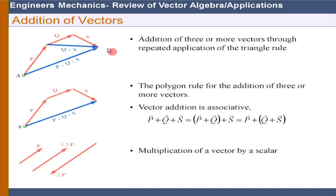When adding three or more vectors, we can either apply the triangle rule repeatedly or use the polygon rule. We can do Q + S first and then add P, to form P + Q + S. For the polygon rule, the resultant is similarly P + Q + S. Vector addition is associative: (P + Q) + S equals P + (Q + S).